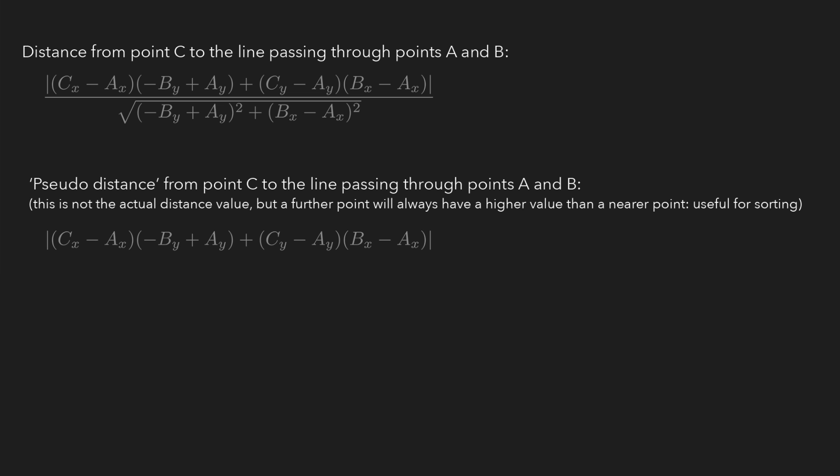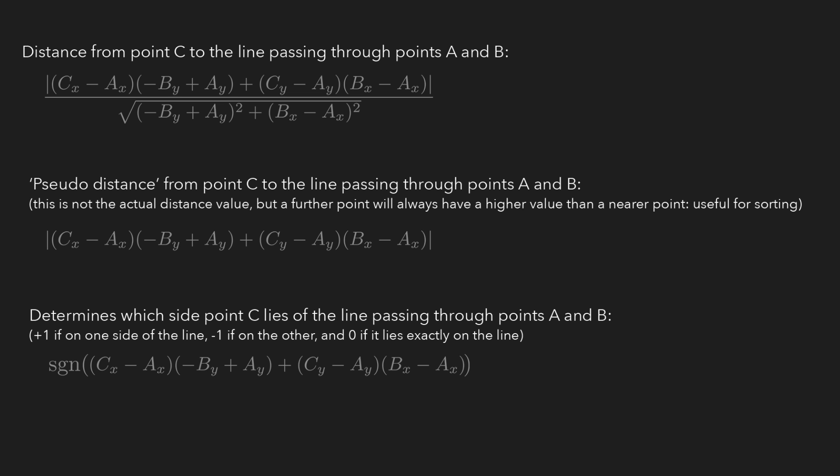Secondly, if we want to figure out on which side of the line a point lies, we can use the same equation without the square root term, but instead of taking the absolute value, we take the sign of the result. This will give us positive 1 if a point lies on one side of the line, negative 1 if it lies on the other side, and 0 if it lies exactly on the line.